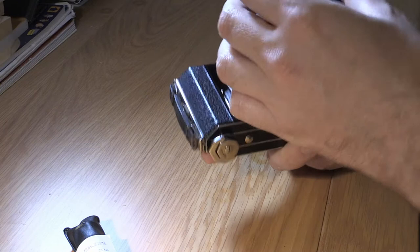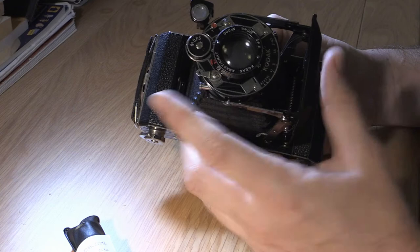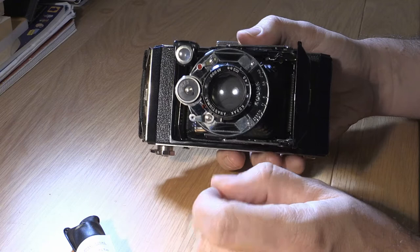Shutter speed is set by this dial here, so you just rotate it. There is a bulb setting where it stays open, so I'll just move it to, maybe one more. So now it stays open until you let go. So that's a way you can look through to see what the aperture looks like, and check that the blades are moving.